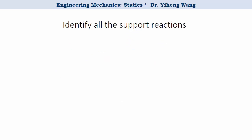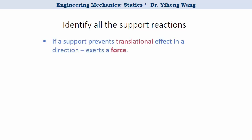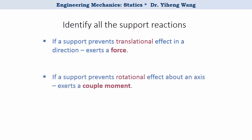In summary, to determine what type of support reaction is associated with a support, here is the rule of thumb: if the support prevents translational motion in a direction, then it exerts a force along that direction against the motion. If the support prevents rotational effect about an axis, then it exerts a couple moment about that axis against the tentative rotation.